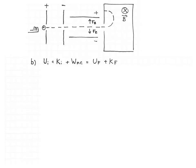I'm going to use conservation of energy to find the potential differences needed. Initial potential energy plus initial kinetic energy plus work done by non-conservative forces equals final potential energy plus final kinetic energy. The initial potential energy is q·V_initial, the initial kinetic energy of the ions is 0, and the work done by non-conservative forces is 0. This gives us: minus q·ΔV = ½mv², where ΔV = V_final minus V_initial.